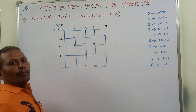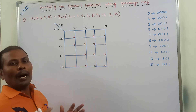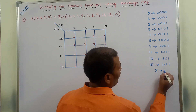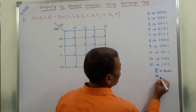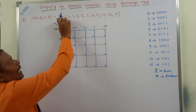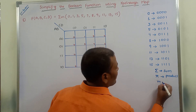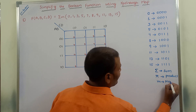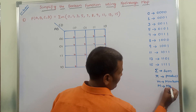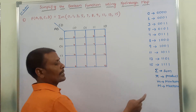Here sigma (σ) is nothing but sum, and pi (π) is nothing but product. In this problem, sigma represents the sum, and small m represents the minterm, whereas capital M represents the maxterm. Small m represents the minterm.